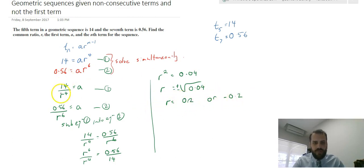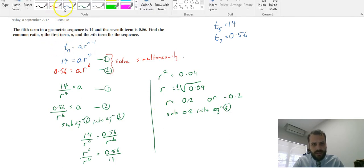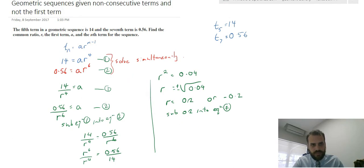Then we just need to sub both of those back into one of our initial equations. So I can sub 0.2 into equation 1, and that means, let's grab a pen here, that 14 over 0.2 to the power of 4 equals a, or 14 over negative 0.2 to the power of 4 equals a.